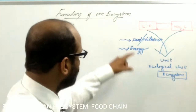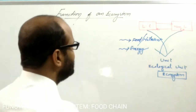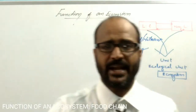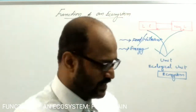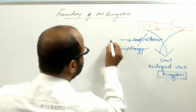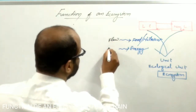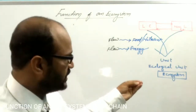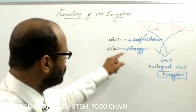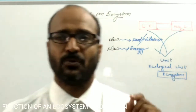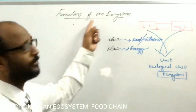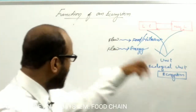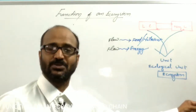All the members of the ecosystem are interconnected and interdependent because of food and energy. These living components and non-living components are interconnected in such a way that there is the flow of food and there is the flow of energy. These two are the functional aspects of the ecosystem. Today's topic is the function of an ecosystem — how nutrients flow and how energy flows in the ecosystem.